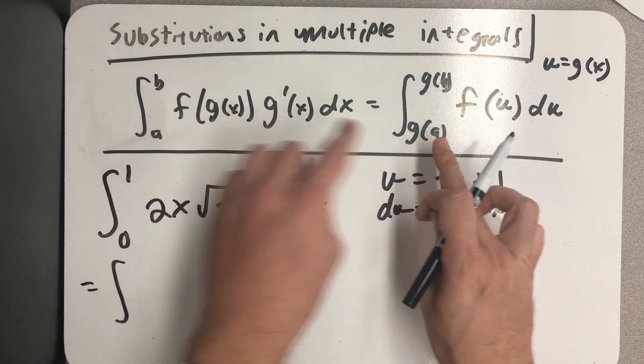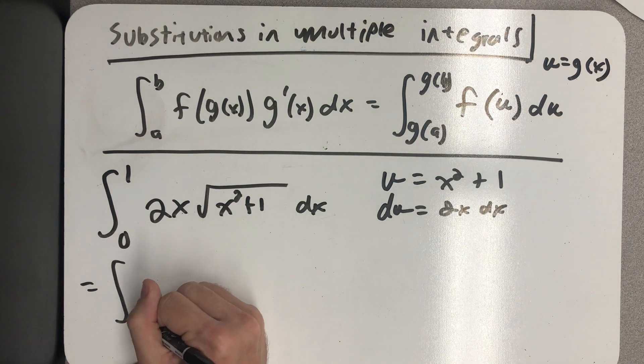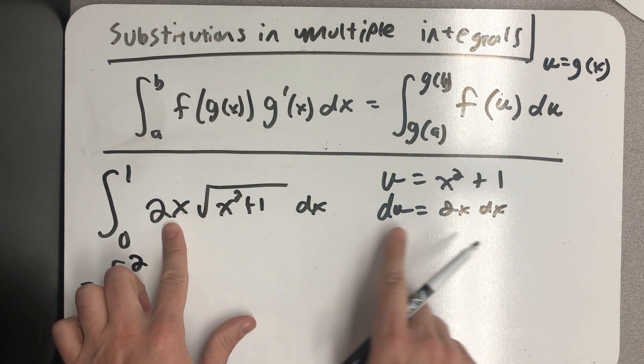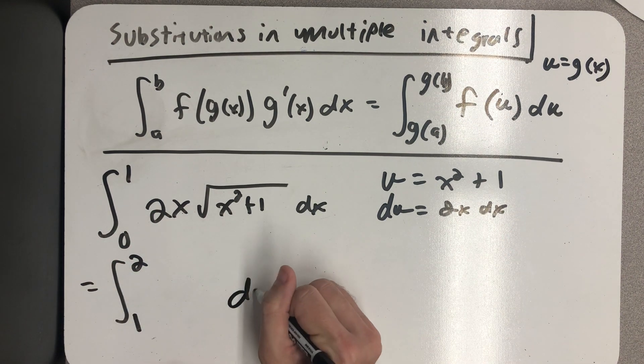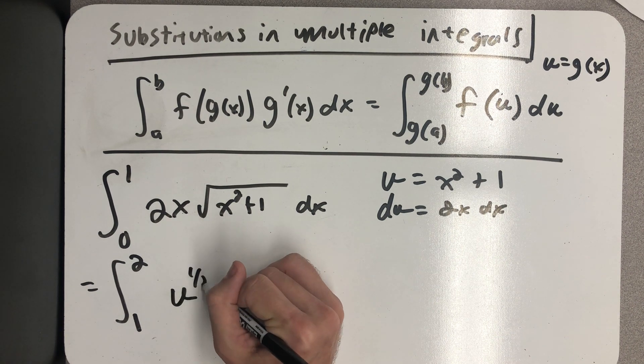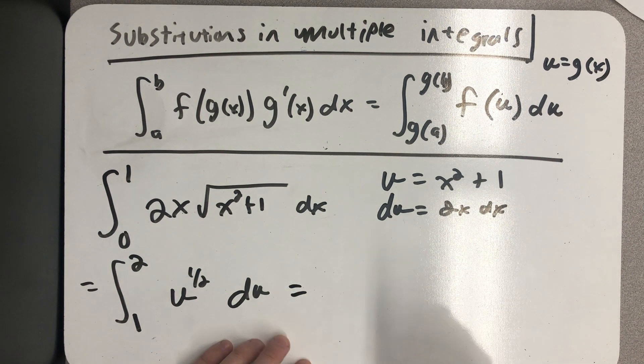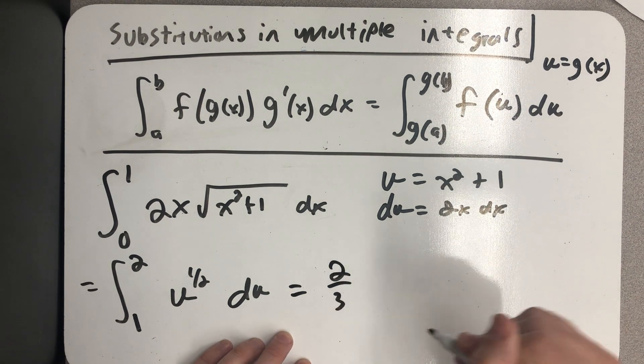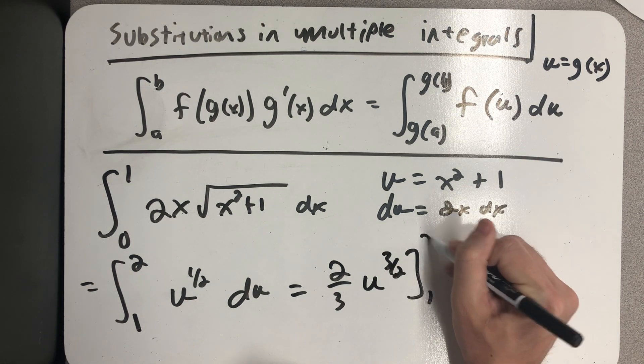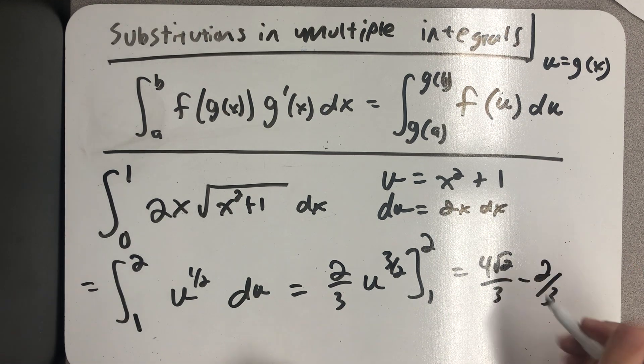We change our bounds. We put the old bounds into the function. So we plug in zero and we get out one, we plug in one and we get out two. And then 2x dx, well that's literally just du. And then this is just f(u), u to the one half power. Pretty easy to find this definite integral using the power rule. And we end up with 4 root 2 over 3 minus 2 thirds.